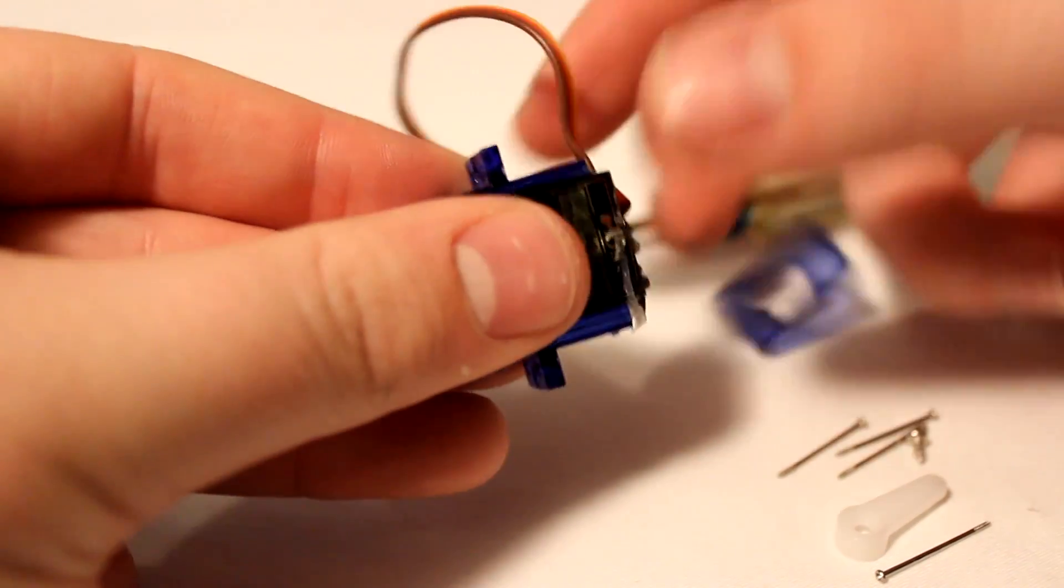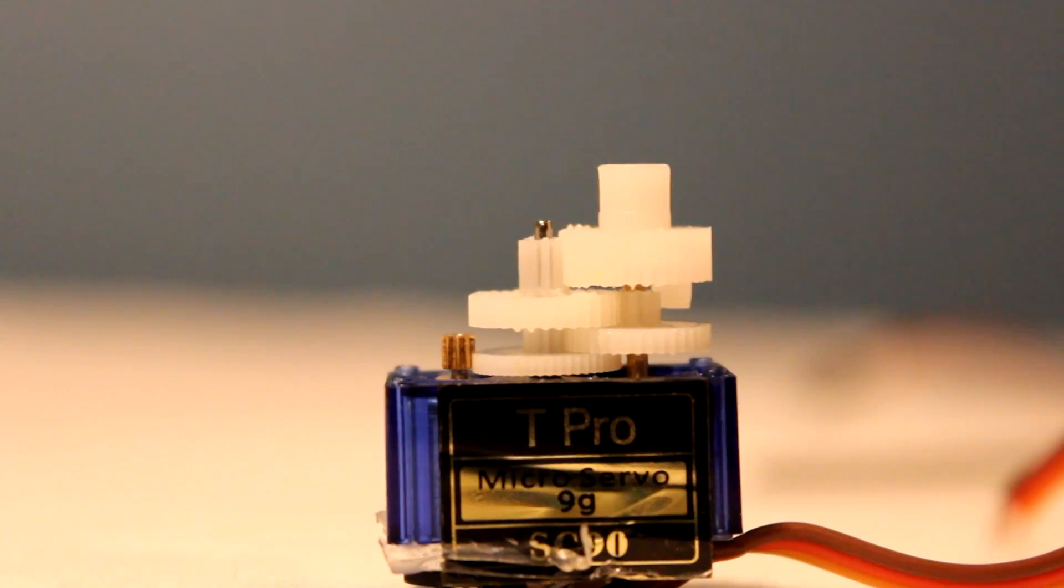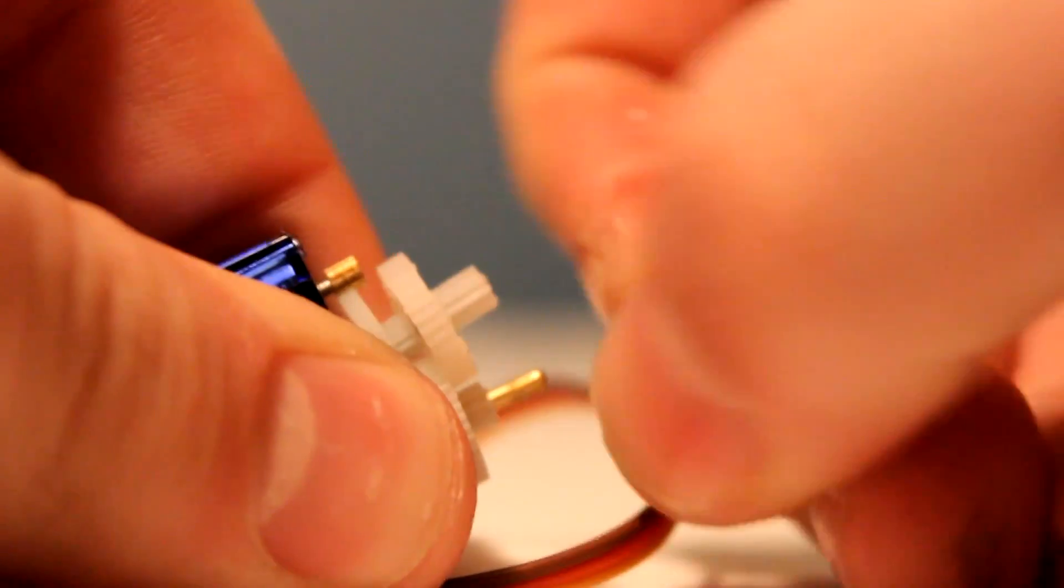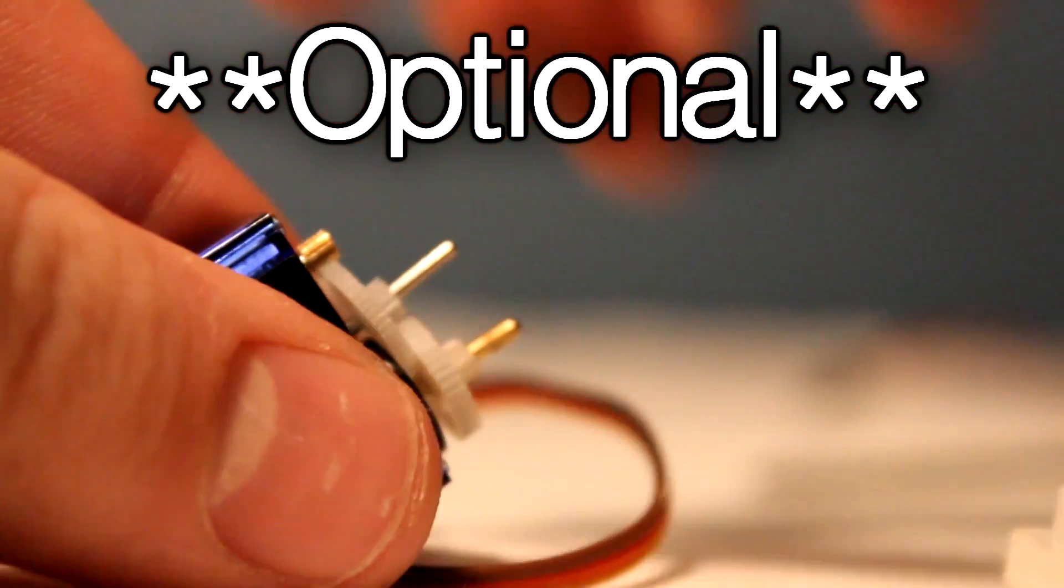Unscrew the broken servo and take the top and bottom covers off. There should be four gears, two on the motor shaft and two on the potentiometer shaft. Take all them off but keep the ones for the potentiometer.